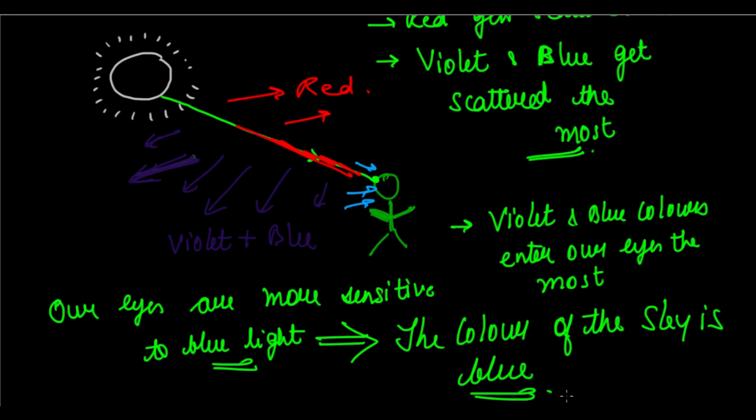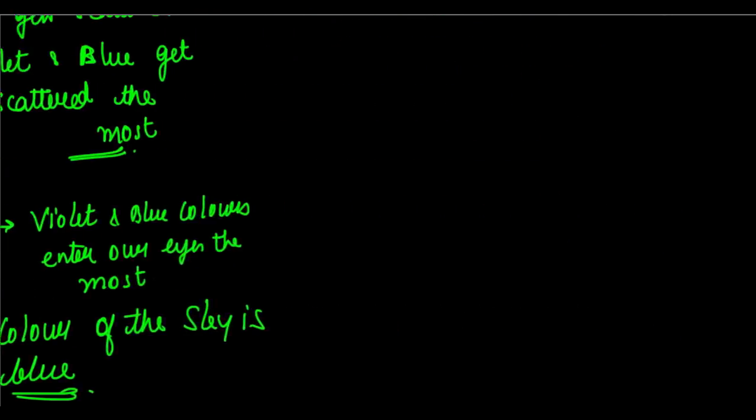This is all because of atmospheric scattering of light. If you go into space, there is no atmosphere, so there is no scattering of light, and hence the sky appears dark. But here we have a colorful world, all because of the scattering of light by the atmosphere.